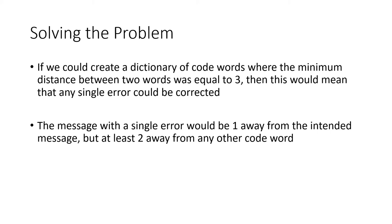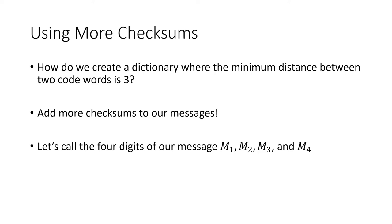So how do we accomplish that? How do we make a dictionary where the minimum distance between two code words is three? We're going to need more check digits — more checksum digits. One checksum digit at the end of our message, which is what we've been using, is just not enough.